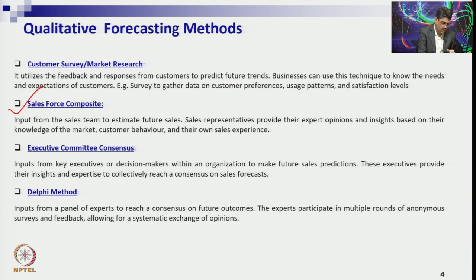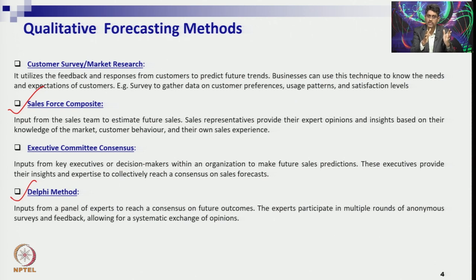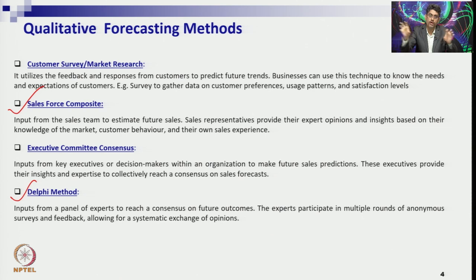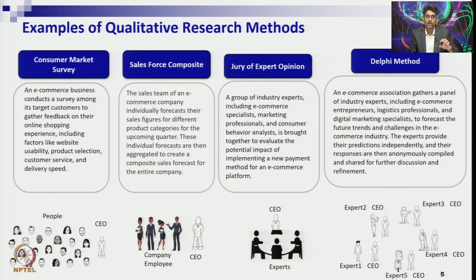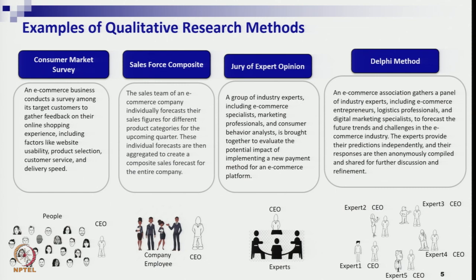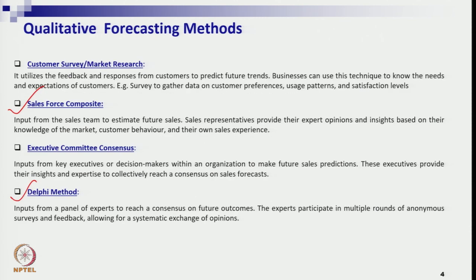The last qualitative method is the Delphi method, which is a superset of executive committee consensus and is actually the most powerful. It is used not only in forecasting but also in other domains. The Delphi method is an iterative process — unlike executive committee consensus where one panel makes a decision at one time, in Delphi you form multiple expert panels. Each panel comes up with their opinion, and you proceed through multiple rounds.